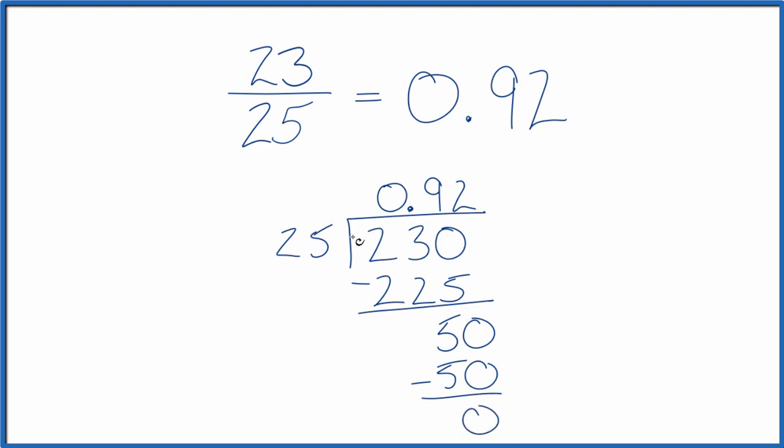So 23 divided by 25, that's the decimal, 0.92. And that's what we found before on our calculator. So the fraction 23 over 25 can be written as the decimal, 0.92.